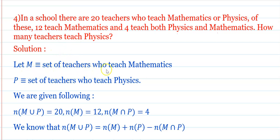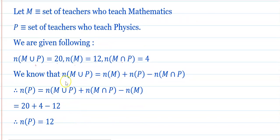Let M be the set of teachers who teach mathematics and P the set of teachers who teach physics. We are given: n(M union P) = 20, n(M) = 12, n(M intersection P) = 4. Using the formula: n(M union P) = n(M) + n(P) minus n(M intersection P), we want to find n(P).